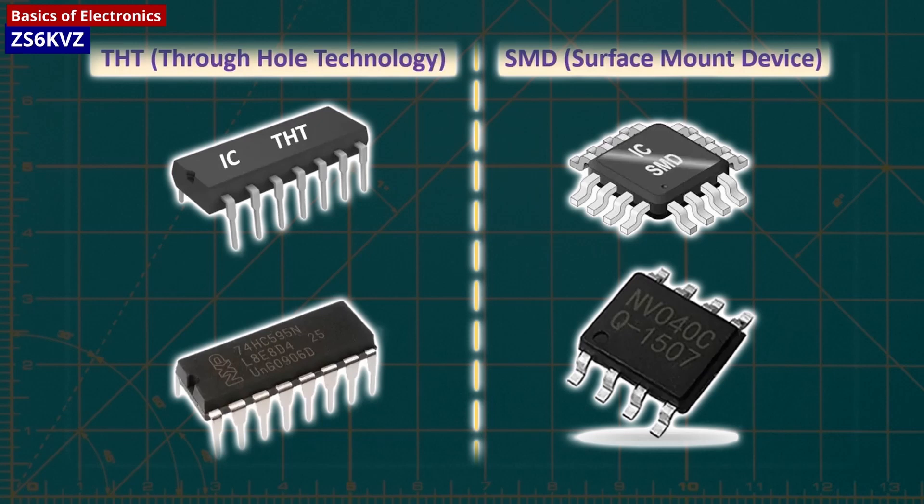As a beginner, through-hole mounting (THT) chips will be the main type of IC used, while surface-mount-soldered (SMD) chips are more advanced.